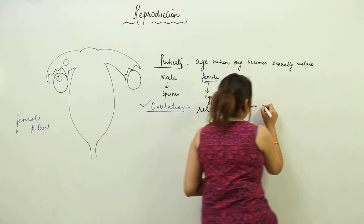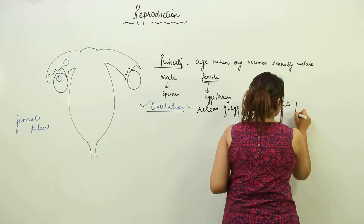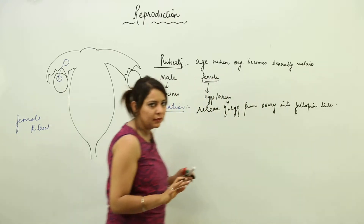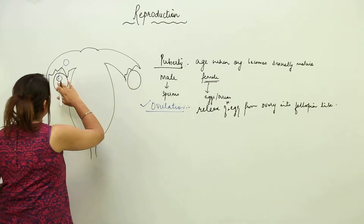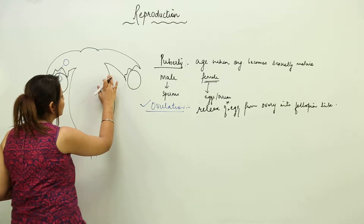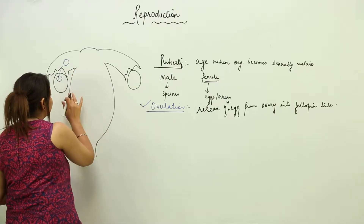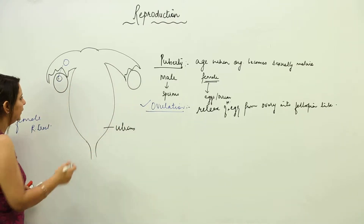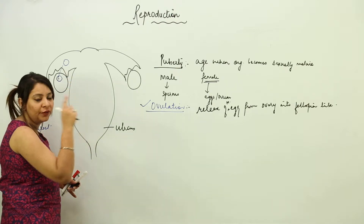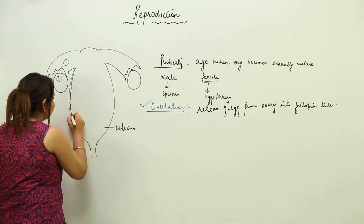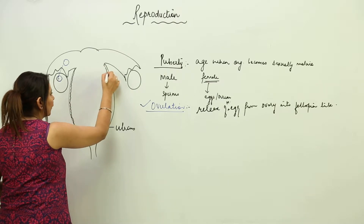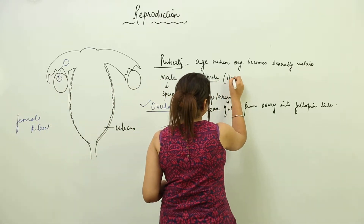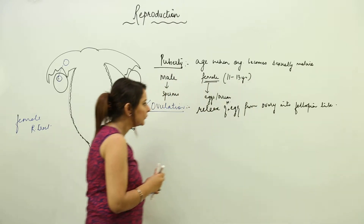From the time of ovulation, thickening of the uterine wall starts occurring. The uterine wall starts becoming thicker from day one of ovulation. This is a normal process which occurs in girls from the age when they attain puberty, that is approximately 11 to 13 years of age.